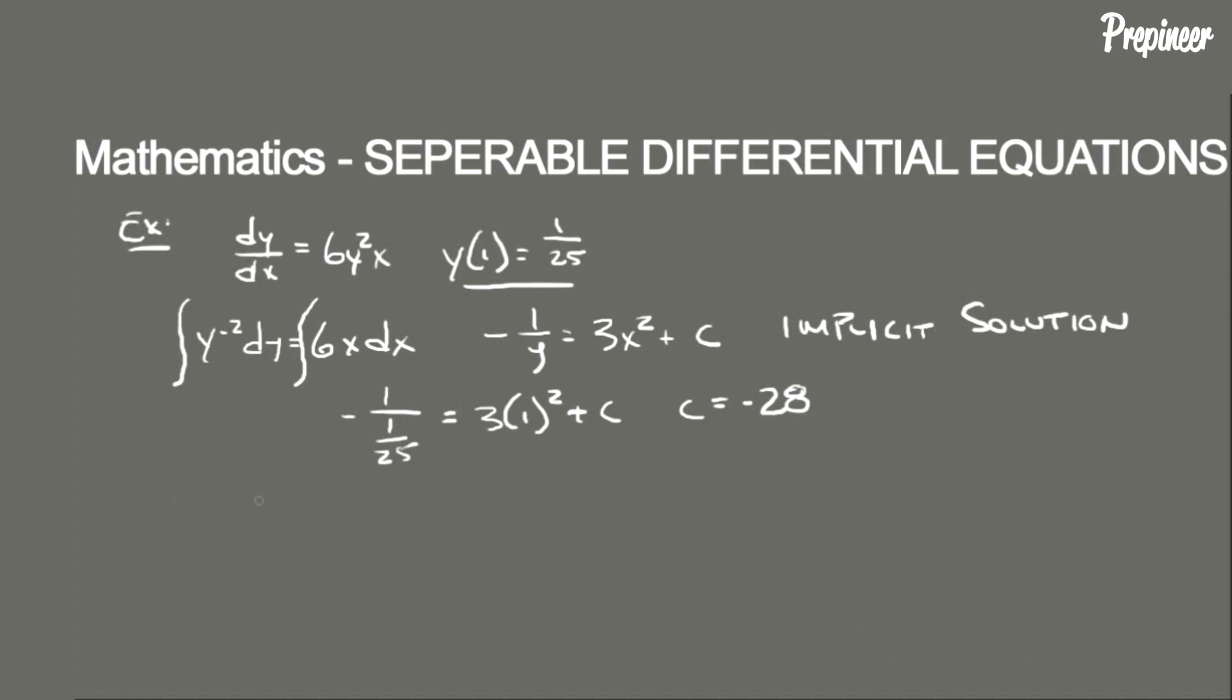Now plugging this back into the equation we get negative 1 over y equals 3x squared minus 28. And now let's just get y by itself on the left side to get our explicit solution. We find that y(x) equals 1 divided by 28 minus 3x squared. So that is our explicit solution of this separable differential equation.